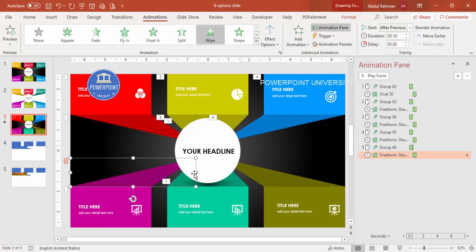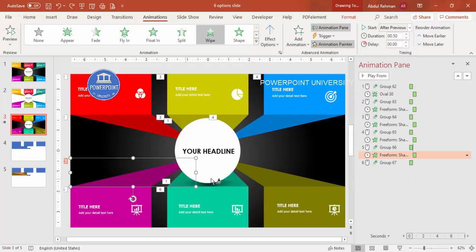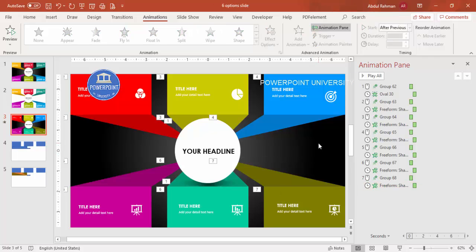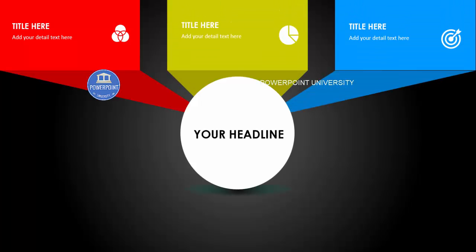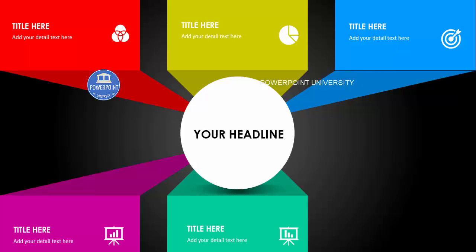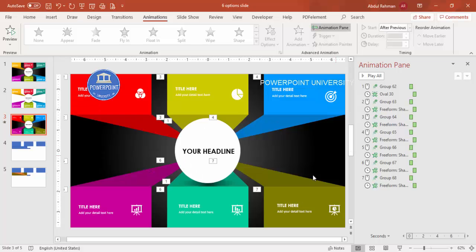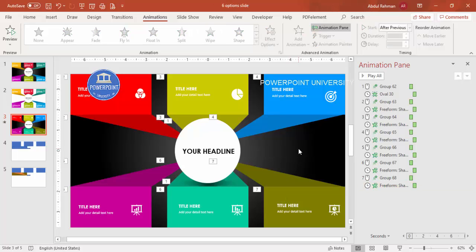Select the remaining bottom options and apply the same animations coming from the bottom. When you play the full animation, the center circle appears first with a zoom, followed by each panel flying in from top or bottom in sequence. You may notice small gaps between shapes — you can fix these by slightly moving the shapes up or down. This completes the infographic slide design.